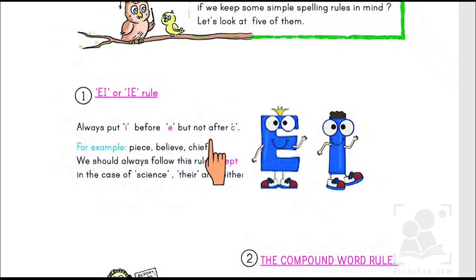So E comes first and then I. For example, peace, believe, chief. You should always follow the rules except in the case of science, there, and either. Let's move to the next rule.